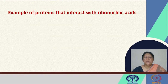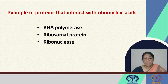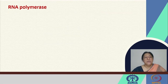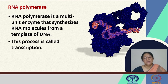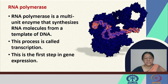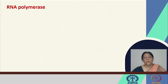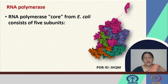Examples of other proteins that interact with RNA are RNA polymerase, ribosomal proteins, and ribonucleases. The RNA polymerase is a multi-subunit enzyme that synthesizes RNA molecules from a DNA template — the process of transcription, which is the first step in gene expression. This is the first step in gene expression involving an RNA polymerase interacting with RNA.